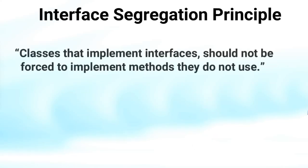The next one is the Interface Segregation Principle, which states that classes that implement interfaces should not be forced to implement methods that they do not use. It's about how to write interfaces. Once an interface is becoming too large, we need to split it into smaller interfaces that are more specific, and each interface will be defined by the client that will use it. The client of the interface will only know about the methods that are related to them. If you add methods that shouldn't be there, the classes implementing the interfaces will have to implement those methods as well. That's why the client shouldn't be forced to depend on interfaces they don't use.